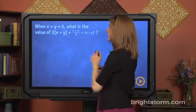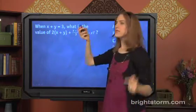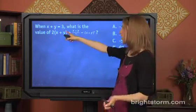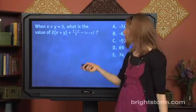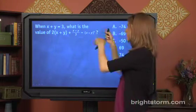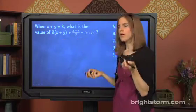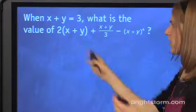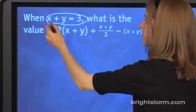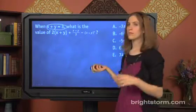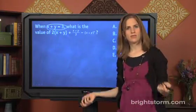When x plus y is 3, what is the value of 2(x + y) + (x + y)/3 - (x + y)⁴? So again, looks horrible, but what do we know here? We know x plus y is equal to 3. And now this is a case where you would just plug that in wherever you see x plus y.